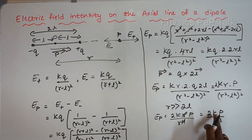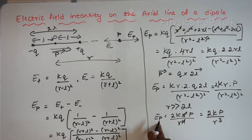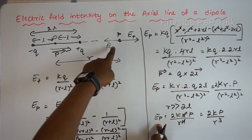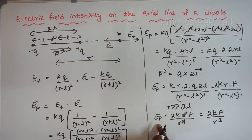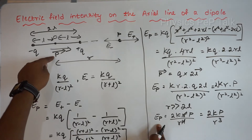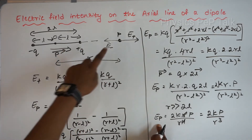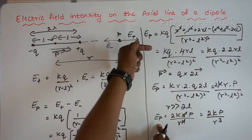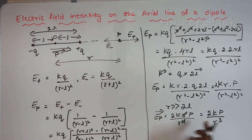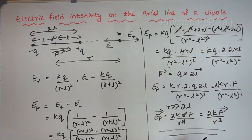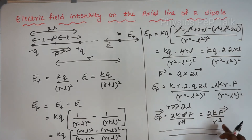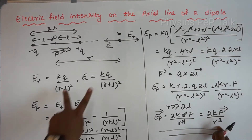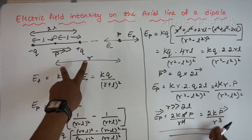K is equal to 1 divided by 4 pi epsilon naught. The resultant electric field must also have a direction. Since the dipole moment is directed from minus Q toward plus Q, and point P is close to the positive charge, the resultant electric field at point P is in the same direction as the dipole moment — that is, along vector p. This is the final equation for electric field intensity on the axial line: it is in the direction of the dipole moment and inversely proportional to the cube of the distance R.